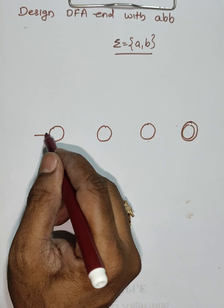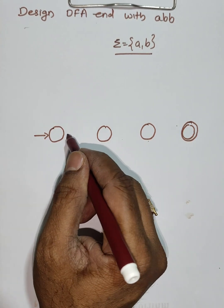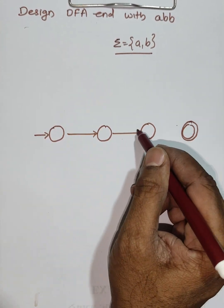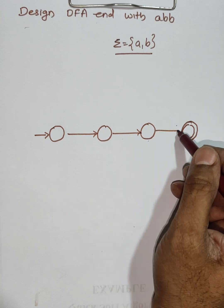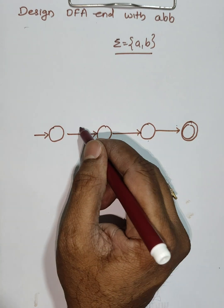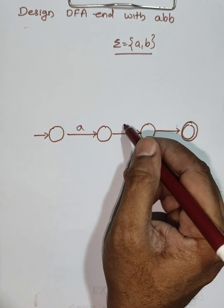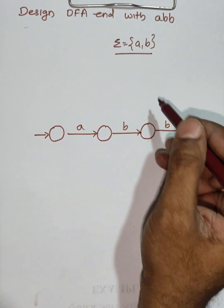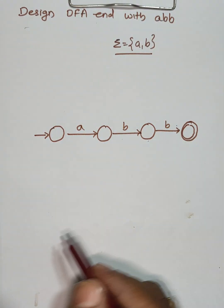The initial length of the string is three symbols: A, B, B — and this is accepted.